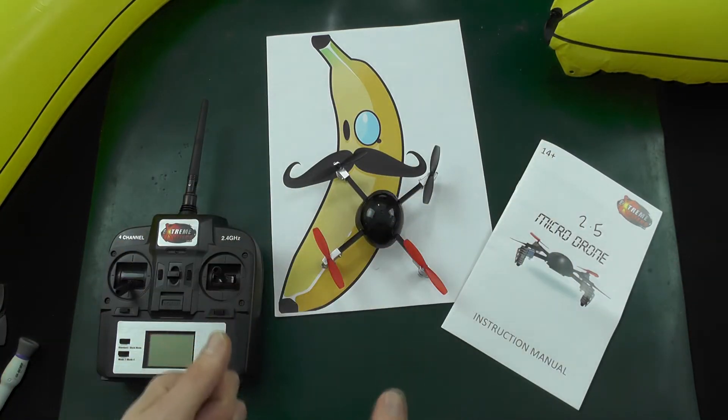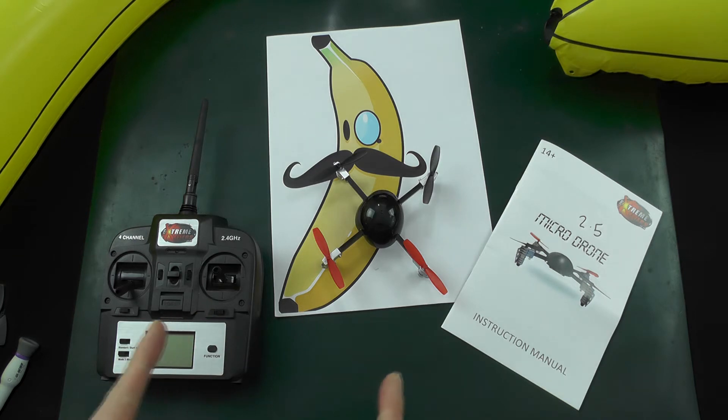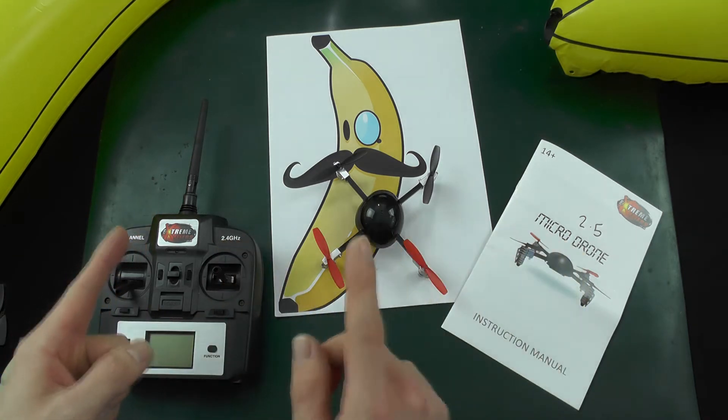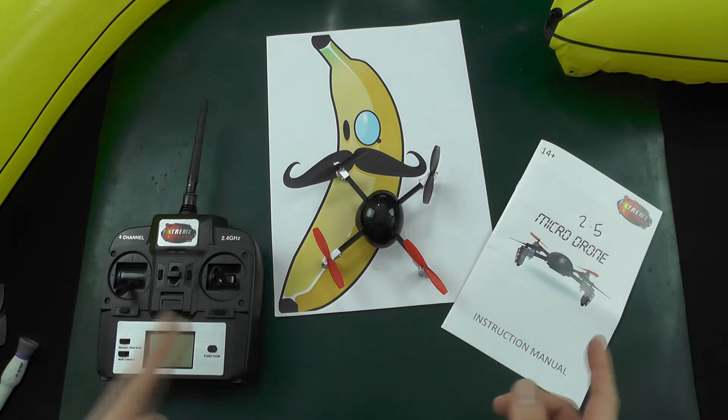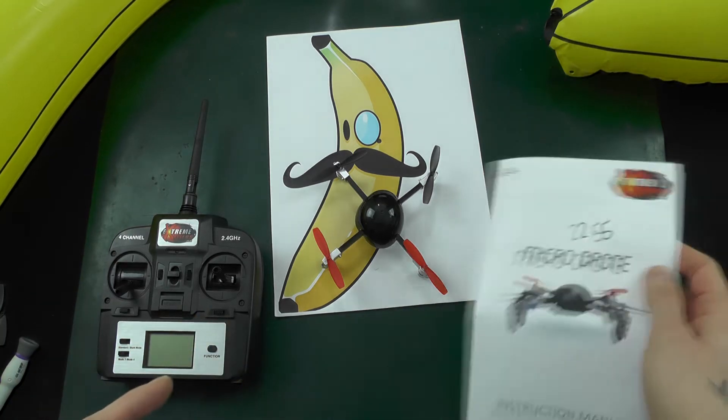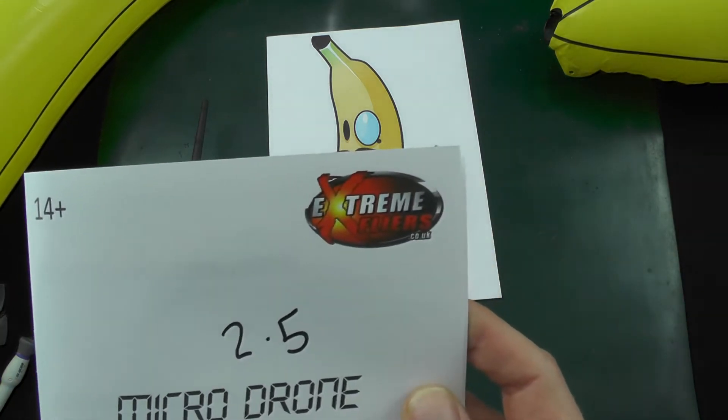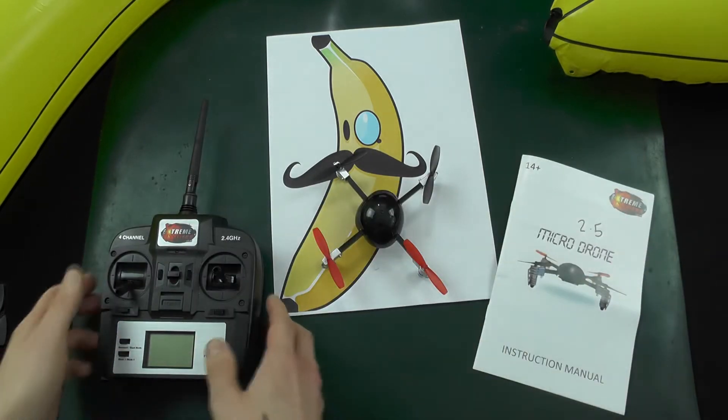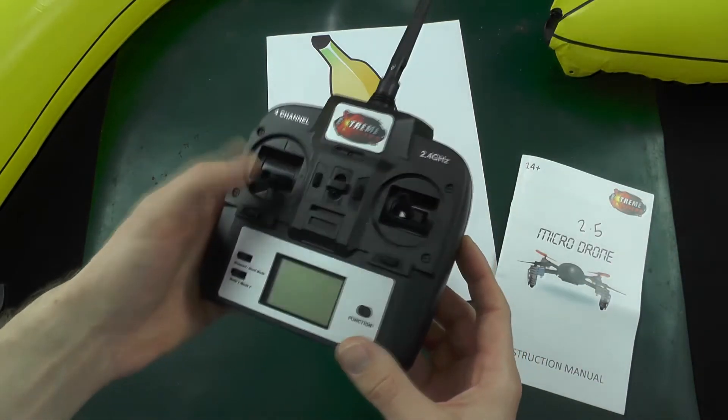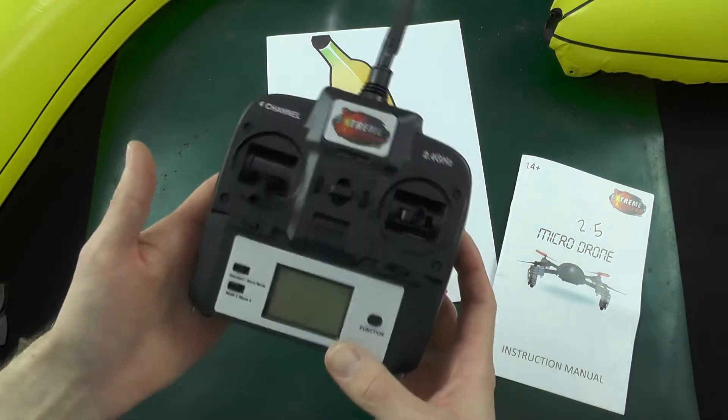This will cover the 1.0 drone all the way through to the 3.0 that's coming out first of May on Indiegogo from extremeflyers.co.uk. So again, throttle in the down position for this. I'm going to use mode 2 because that's how I roll.